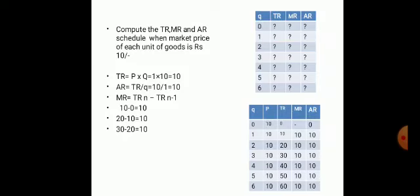For the solution, first draw the quantity column, then add a price column, then TR, MR, and AR. Quantity is 0, 1, 2, 3, 4, 5, 6. In a perfectly competitive market, price is uniform regardless of quantity sold, so the price column is 10, 10, 10, 10, 10, 10, 10. To calculate TR, the formula is Price × Quantity: 0×10=0, 1×10=10, 2×10=20, 3×10=30, 4×10=40, 5×10=50, 6×10=60.